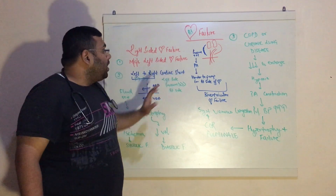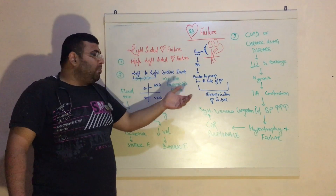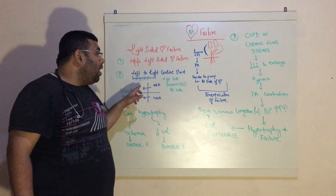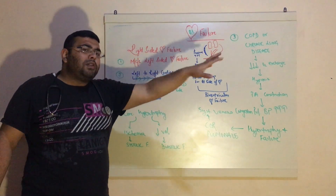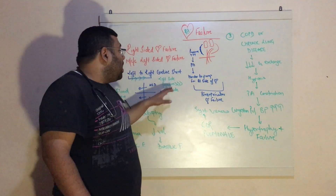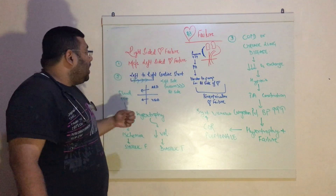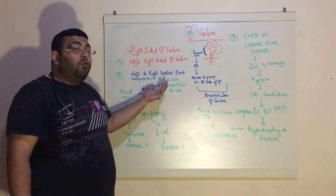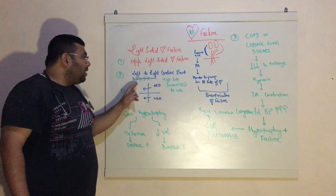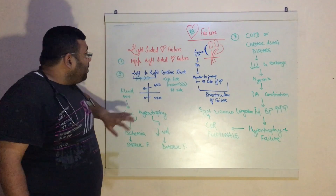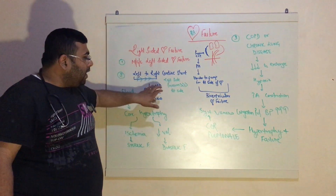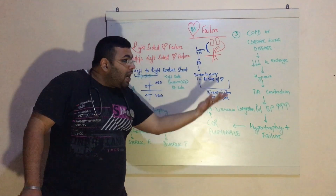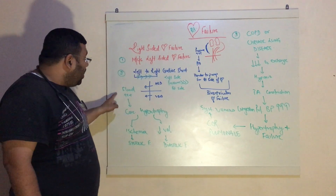Now coming to the next point: left-to-right cardiac shunts. Shunts are always from the left side to the right side. Why does blood always move from the left side to the right side? Because pressures are higher on the left side. Because of that, in defects such as atrial septal defect or ventricular septal defect, blood will always move from the left to the right side — I have made arrows for your easy understanding. When this defect is present, fluid or blood comes from the left side to the right side in greater quantities.